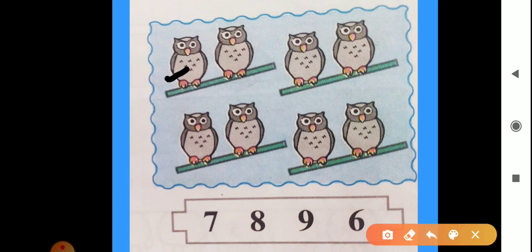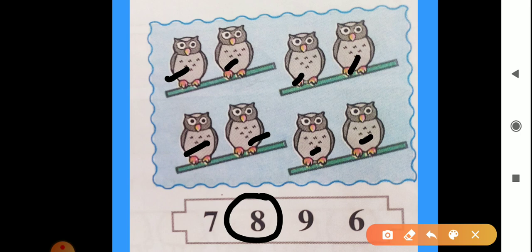This is 1, 2, 3, 4, 5, 6, 7 and this is 8. So how many owls? 8 owls. So we will circle the number 8. Okay. This is the counting and circling the correct number. Okay.